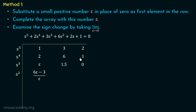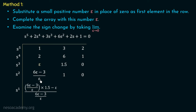Moving to the s² row: the first term is (ε×6 − 2×1.5)/ε = (6ε − 3)/ε. The next element is (ε×1 − 2×0)/ε = ε/ε = 1. The third element is 0 because there are no non-zero terms at that position in the two preceding rows.